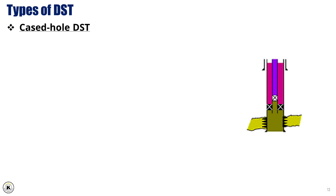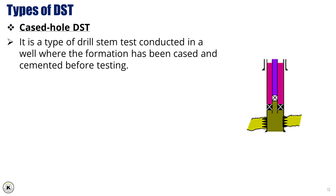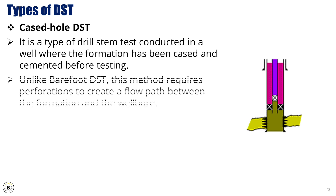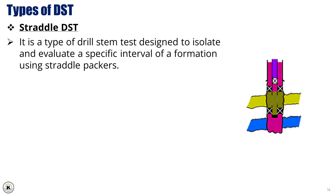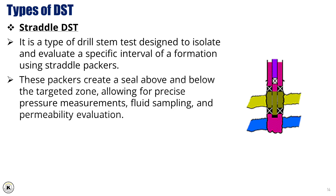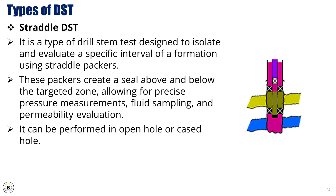Cased hole DST is a type of drill stem test conducted in a well where the formation has been cased and cemented before testing. Unlike barefoot DST, this method requires perforations to create a flow path between the formation and the wellbore. Straddle DST is designed to isolate and evaluate a specific interval of a formation using straddle packers. These packers create a seal above and below the targeted zone, allowing for precise pressure measurements, fluid sampling, and permeability evaluation. It can be performed in open hole or cased hole.